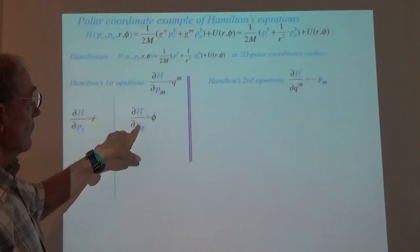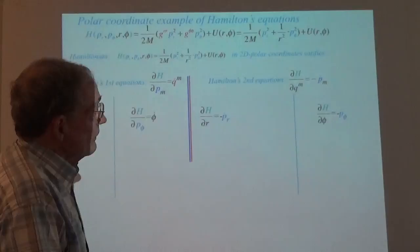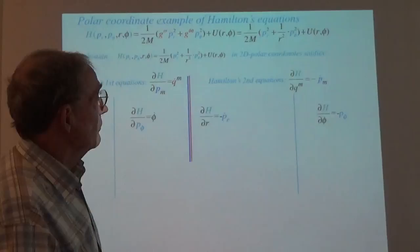For the second equation, where you're worried about the coordinates — the partial derivatives here with respect to the Q's are the same as they were for the Lagrangian, talking about R and phi. So when you do that one, according to the second equation, that's what you should get.